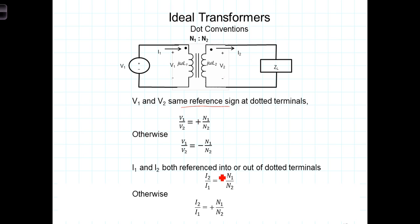Otherwise, they'll be the same sign. So here we have I1 referenced into the dot and I2 referenced out of the dot. But because they're not both into or out of the dot, rather one's in and one's out, I1 and I2 will have the same sign.